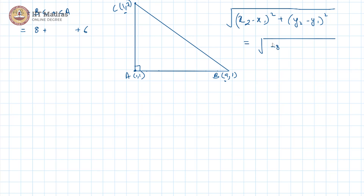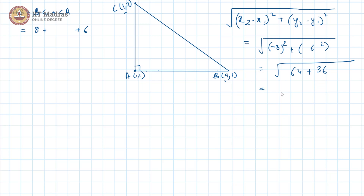For BC: 1 minus 9 gives us minus 8, so we have (minus 8) squared, plus y2 minus y1 is 7 minus 1, that is 6 squared. So we have the square root of 64 plus 36, which is the square root of 100, giving us 10. So BC is 10, and thus our perimeter is 8 plus 6 plus 10, which is 24 units.